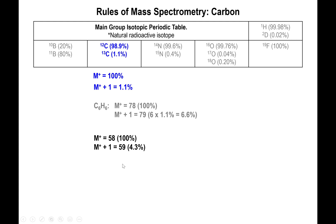When you take a batch of sample and pass it through the mass spectrometer, let's say you get an M+ value of 58 at 100% abundance, and the M+1 peak at 59 is present at 4.3%. To determine how many carbons you have, simply divide 4.3% by 1.1%. You get a value very close to 4, which tells you that your sample contains four carbons. Since each carbon is worth 12 g/mol, four carbons equal 48 g/mol.